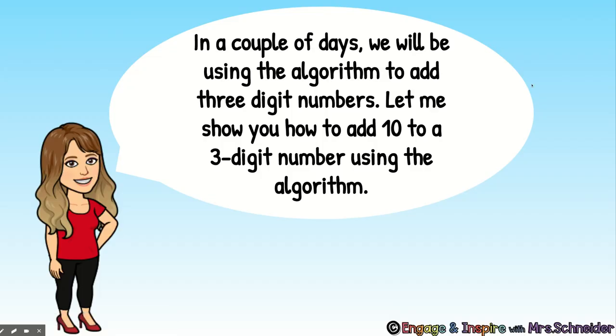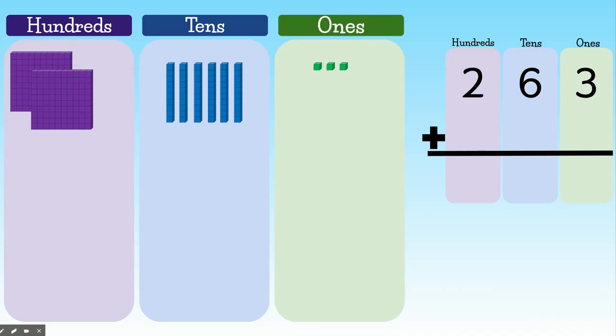In a couple of days, we will be using the algorithm to add three-digit numbers. Let me show you how to add 10 to a three-digit number using the algorithm. Here we have the number 263 plus 10.